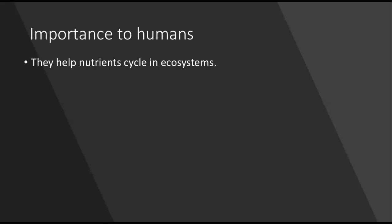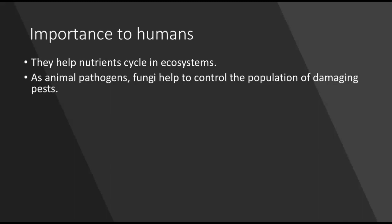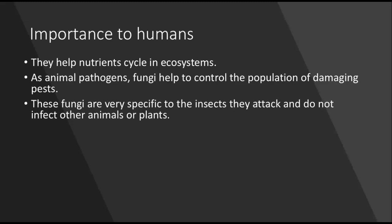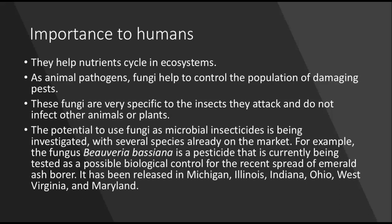What is the importance of fungi to humans? They help nutrients cycle in ecosystems. They are also animal pathogens and can help control populations of damaging pests, though they can also decimate organisms helpful to ecosystems. Fungi are very specific to the insects they attack and do not infect other animals or plants, giving them potential as microbial insecticides. One example is the fungus Beauveria bassiana, a pesticide being tested as a biological control for the spread of the emerald ash borer, already released in Michigan, Illinois, Indiana, Ohio, West Virginia, and Maryland.